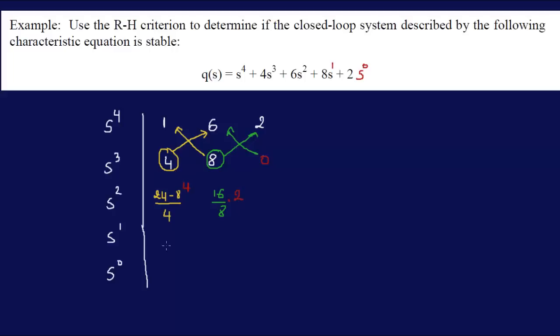Right, so that would be 4 times 8, 2 times 4, over 4. So 32 minus 8, over 4. Okay, so that's 32 minus 8, that's 24, over 4, that's 6, so that's 6 over here. That's 6 over here.